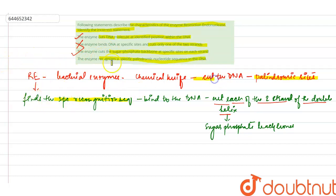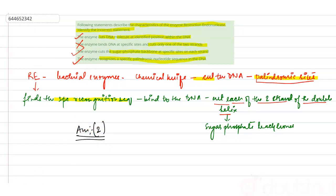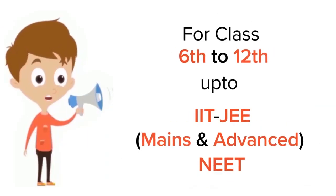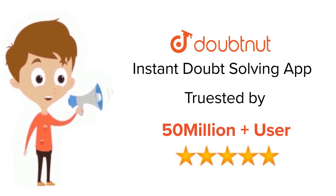The last statement says: the enzyme recognizes a specific palindromic nucleotide sequence. Yes, it finds the specific recognition sequence or palindromic site, then it cuts the DNA — so this statement is also correct. Therefore, the incorrect statement is statement number two, making the answer option number two. For class 6–12, JEE and NEET level — trusted by more than 5 crore students. Download the Doubtnut app today.